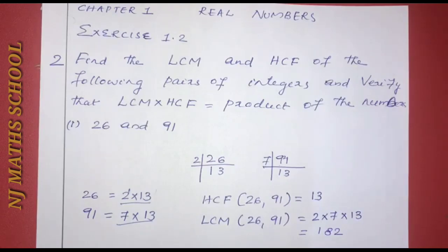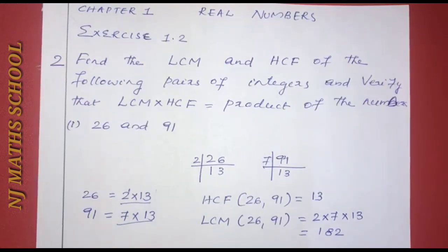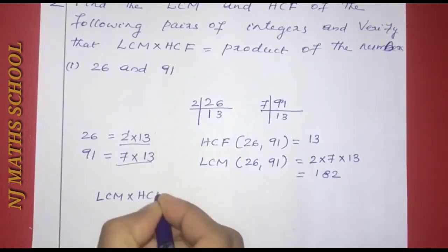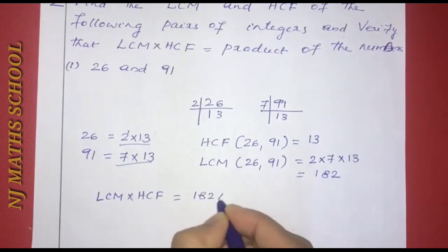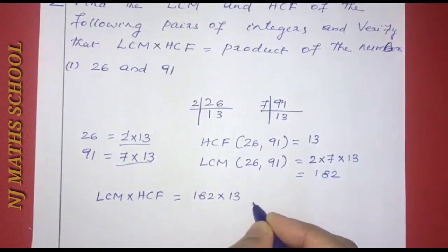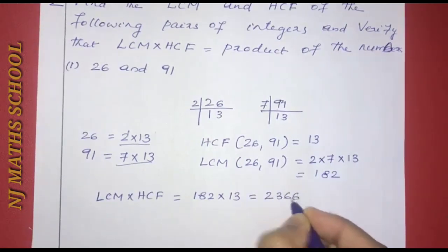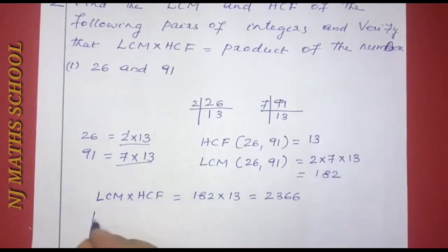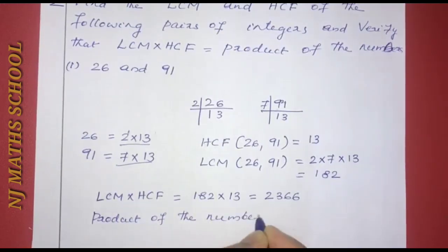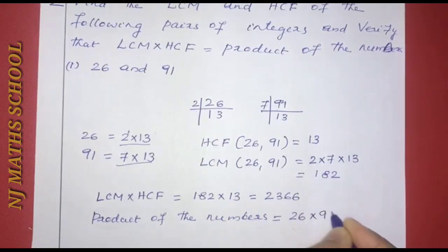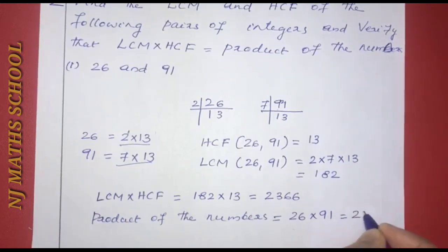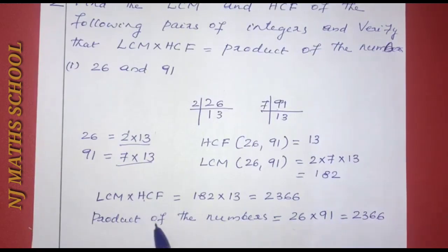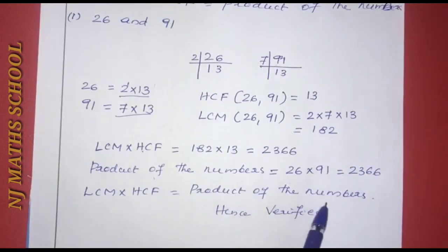LCM equals 182. Now let's verify: LCM into HCF equals 182 into 13. The product of the numbers 26 into 91 equals 2366. LCM into HCF is equal to the product of the numbers. Hence verified.